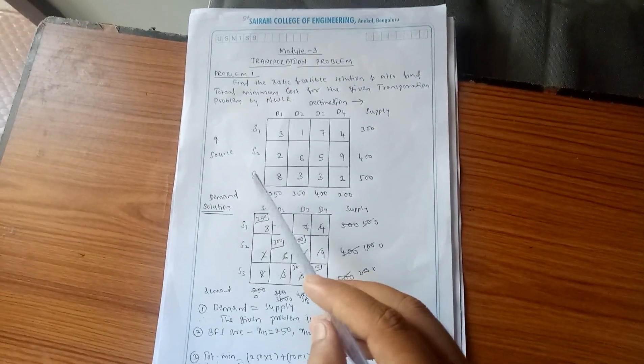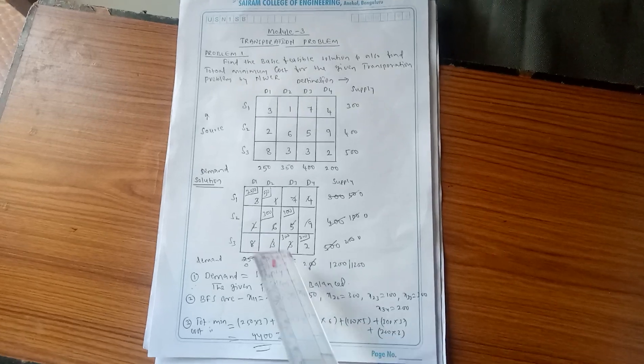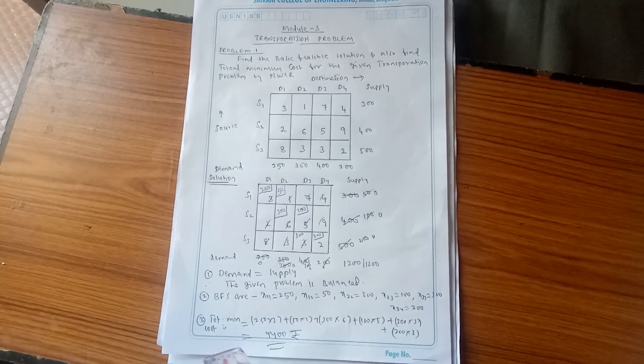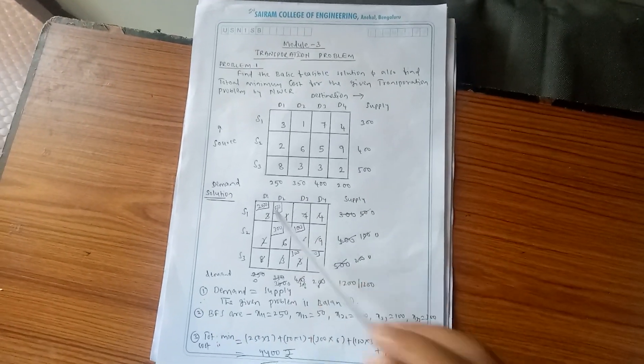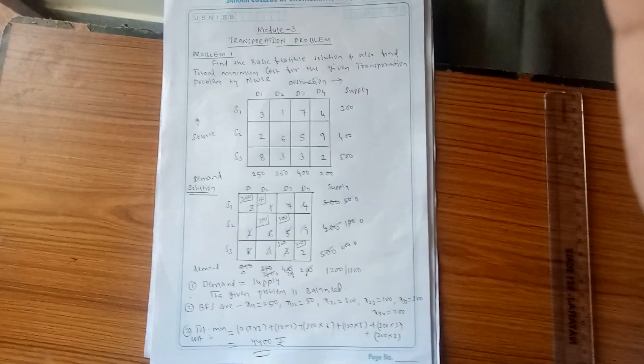Next, calculate the total minimum cost. Multiply each allocated value by its corresponding cost and sum them all: (250 × 3) + (50 × 1) + (300 × 6) + (100 × 5) + (300 × 3) + (200 × 2) = Rs. 4,400. This is the total minimum cost for the given problem. Rs. 4,400 is required to supply from source to destination. This is the Northwest Corner Rule method. I hope you understood this problem. Thank you very much.